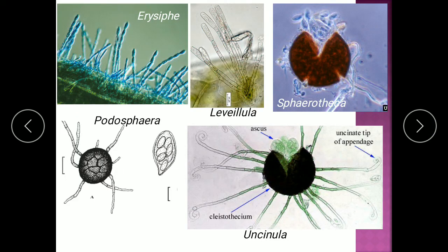Looking at the diagram pictures showing the different organisms that cause powdery mildews, we have Erysiphe, Leveillula, Sphaerotheca, Uncinula, and Podosphaera. All of them are characterized by conidiophores and a globose or spherical structure called the Cleistothecium.